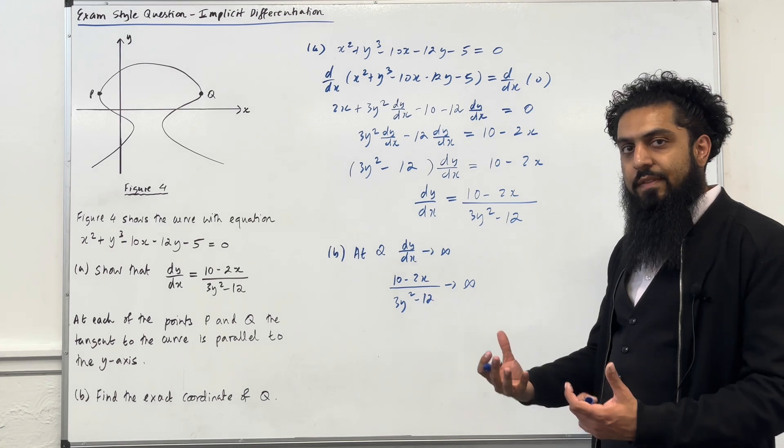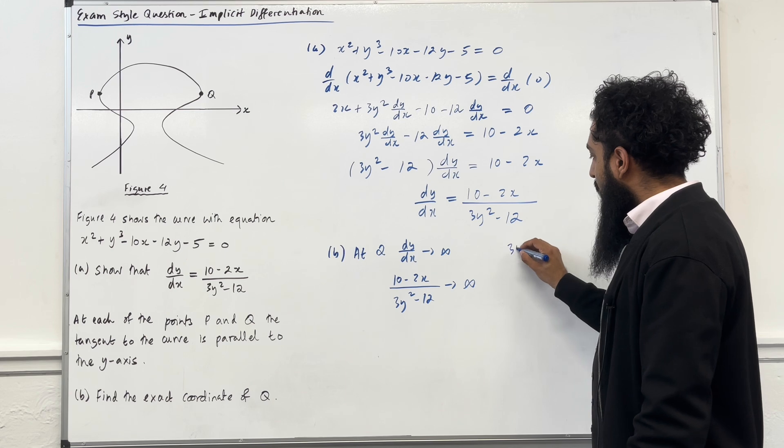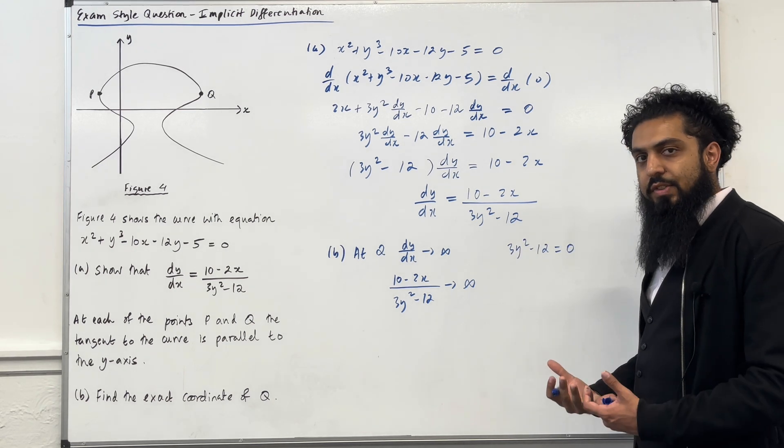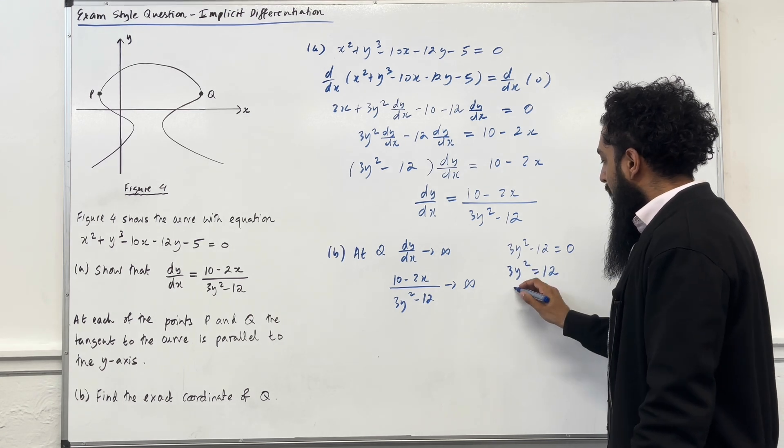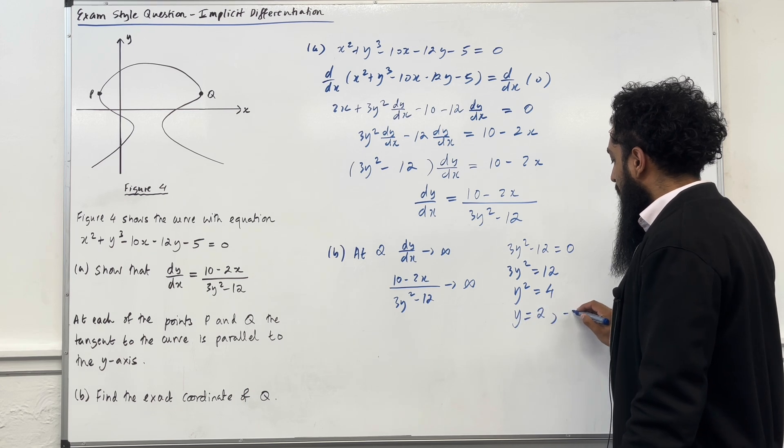Now, the fraction becomes infinite when the denominator is equal to 0. So we take the denominator, 3y squared minus 12, and we set it equal to 0. Now we can solve for y. So I've got 3y squared is equal to 12. Y squared is equal to 4. So y is equal to 2 or minus 2.